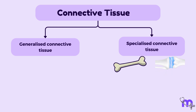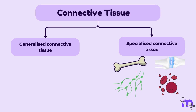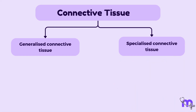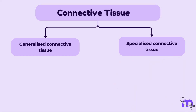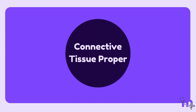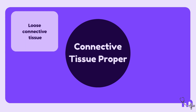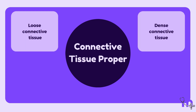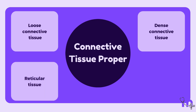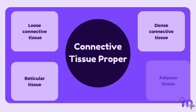Bone, cartilage, blood and lymph have very specific functions and hence come under the category of specialized connective tissue, which we will discuss in subsequent sessions. General connective tissue, also called connective tissue proper, includes subsets like loose connective tissue, dense connective tissue, reticular tissue and adipose tissue.